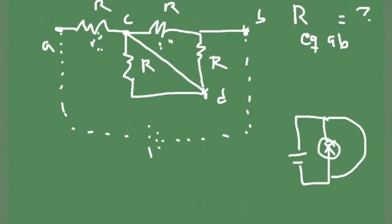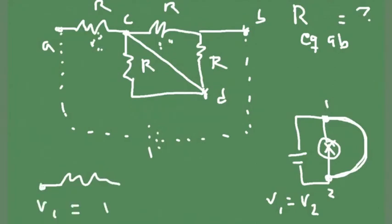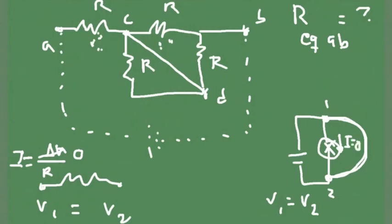There's no current flowing through the light bulb because the wire you connected makes sure that point one and point two have the same potential — V1 equals V2. If the two ends of a resistor have the same potential, Ohm's law tells us the current must be zero, because current results from a difference in potential. So if the difference in potential is zero, the current through that resistor is zero. Effectively, you're taking that light bulb and making it irrelevant to the problem.